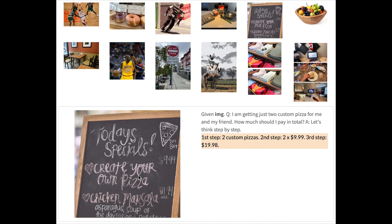Here we have a menu scribbled in chalk on a chalkboard. The question is: 'I'm getting two custom pizzas for me and my friend — how much should I pay in total? Let's think step by step.' What's impressive is that it matches 'custom pizza' in the question to 'create your own pizza' on the menu, looks up the correct price, correctly ignores other prices and irrelevant information, then multiplies two times $10 and gives $19.98 as the total.